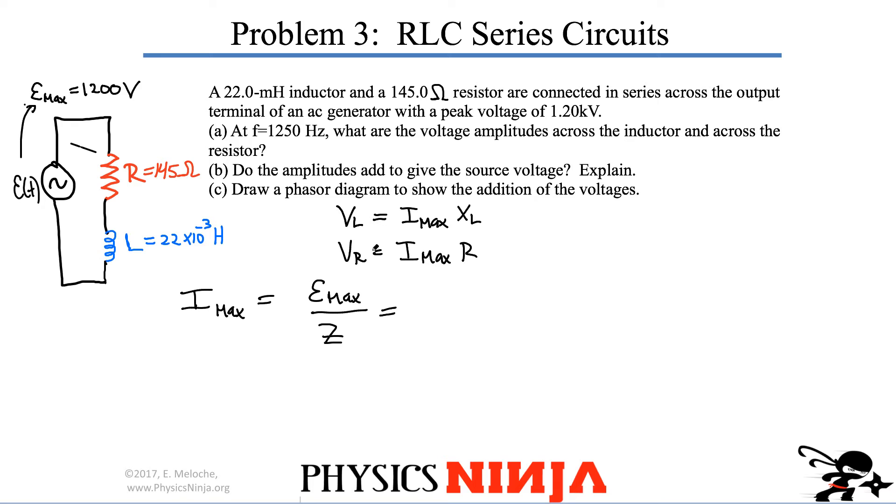And again, when you add impedances, you have to do square roots, right? Square root of R squared plus the reactance of the inductor squared. And here's our maximum voltage from our power supply. So let's substitute in the numbers. So you get 1,200 here divided by square root, here's 145 squared plus...